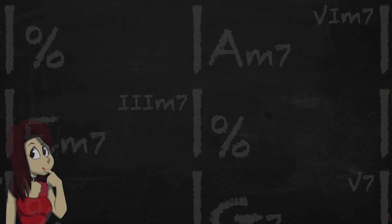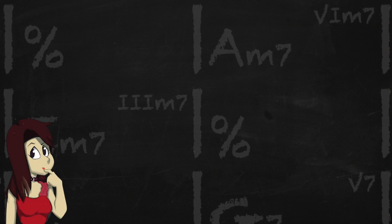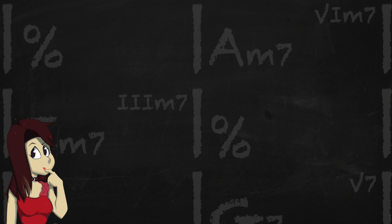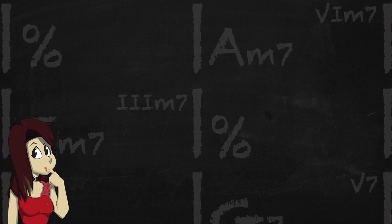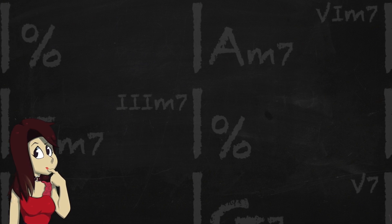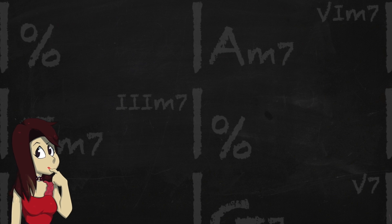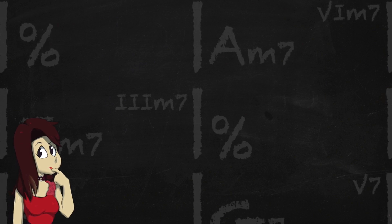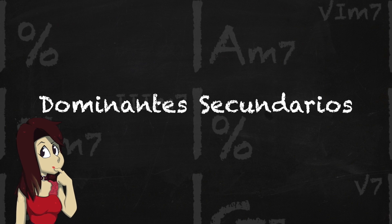Hasta ahora esta progresión armónica está bastante interesante y entretenida. Ahora el problema es que hay muchos compases en donde tú te das cuenta que hay un signo de porcentaje en donde se repiten mucho los acordes. Y lo que vamos a intentar hacer es colocar ciertos acordes de paso a los cuales les vamos a llamar dominantes secundarios.